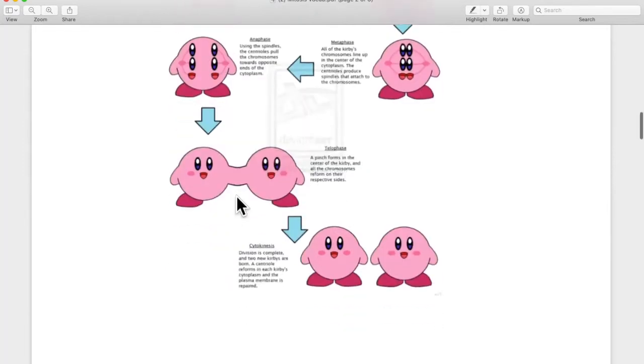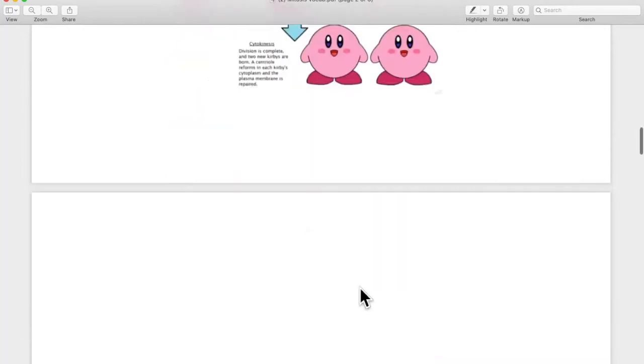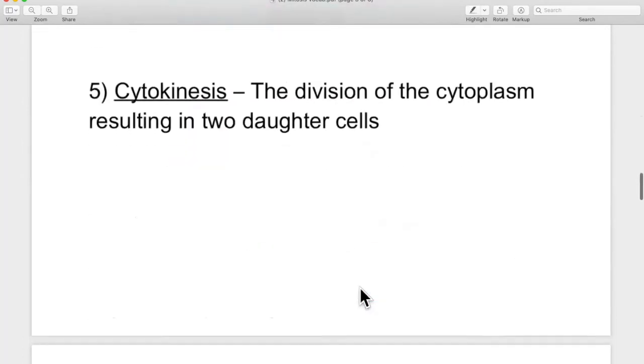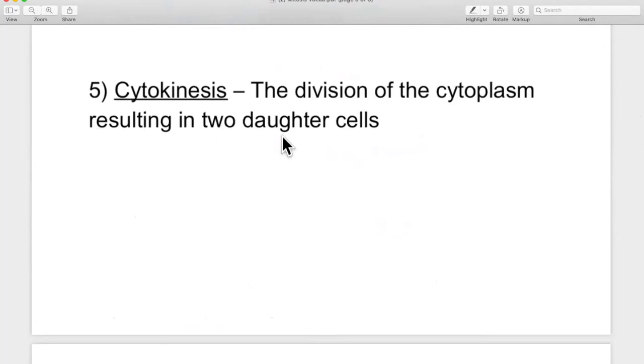Cytokinesis is when the rest of the cell splits. And each side gets DNA. So the division of the cytoplasm resulting in two daughter cells.